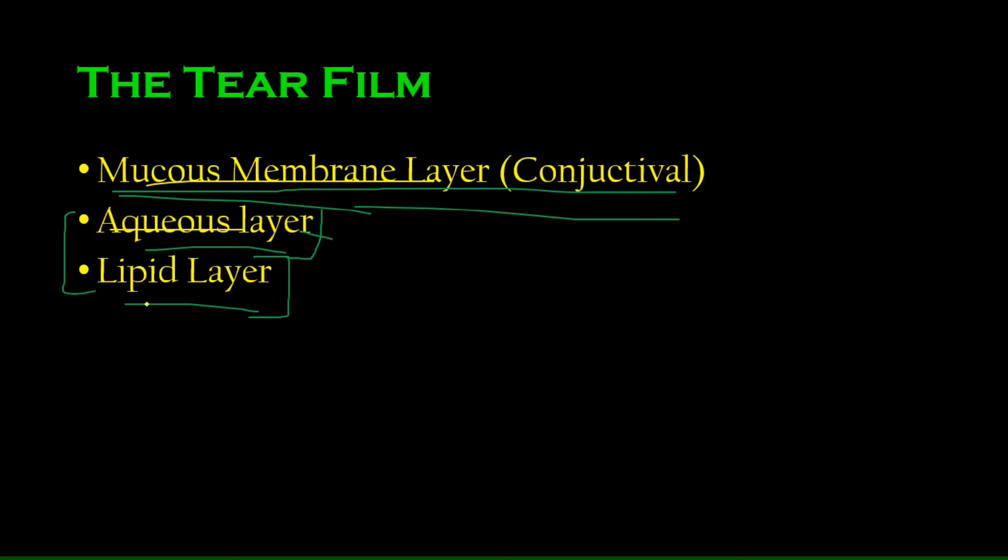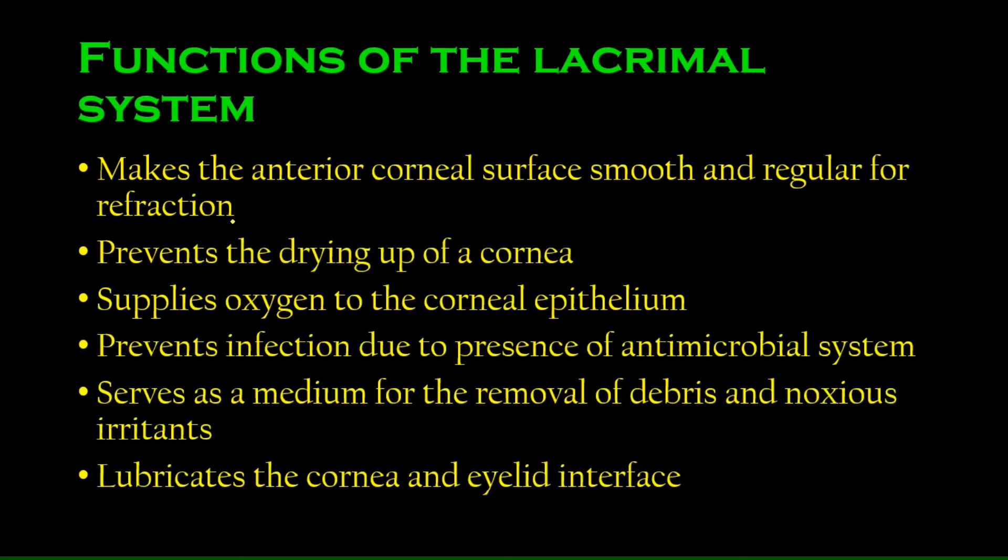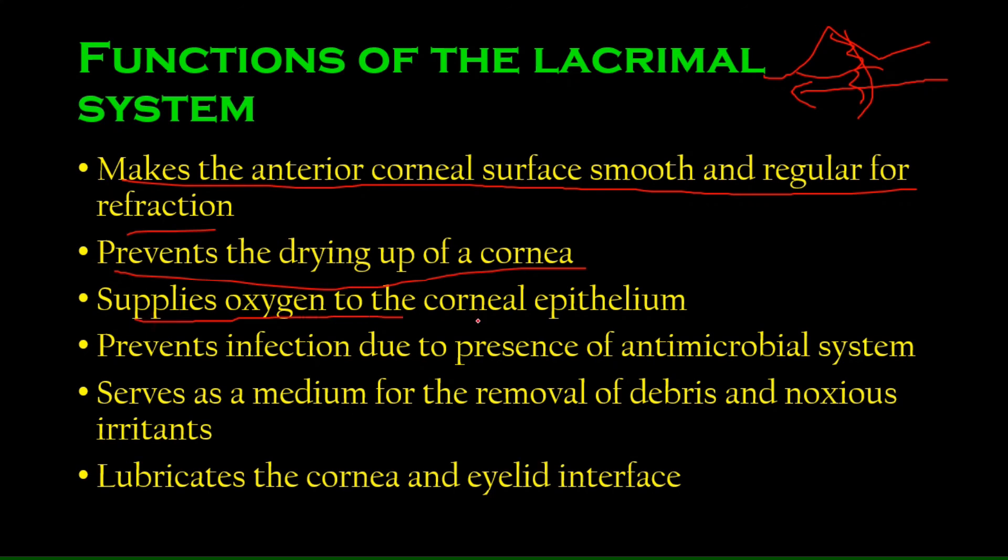Functions of the lacrimal system: It makes the anterior corneal surface smooth and regular for refraction—there are no rough edges to bend the light in a different way. It prevents the drying up of the cornea. It supplies oxygen to the corneal epithelium. Remember, the cornea does not have any blood vessels, it does not have any blood supply.